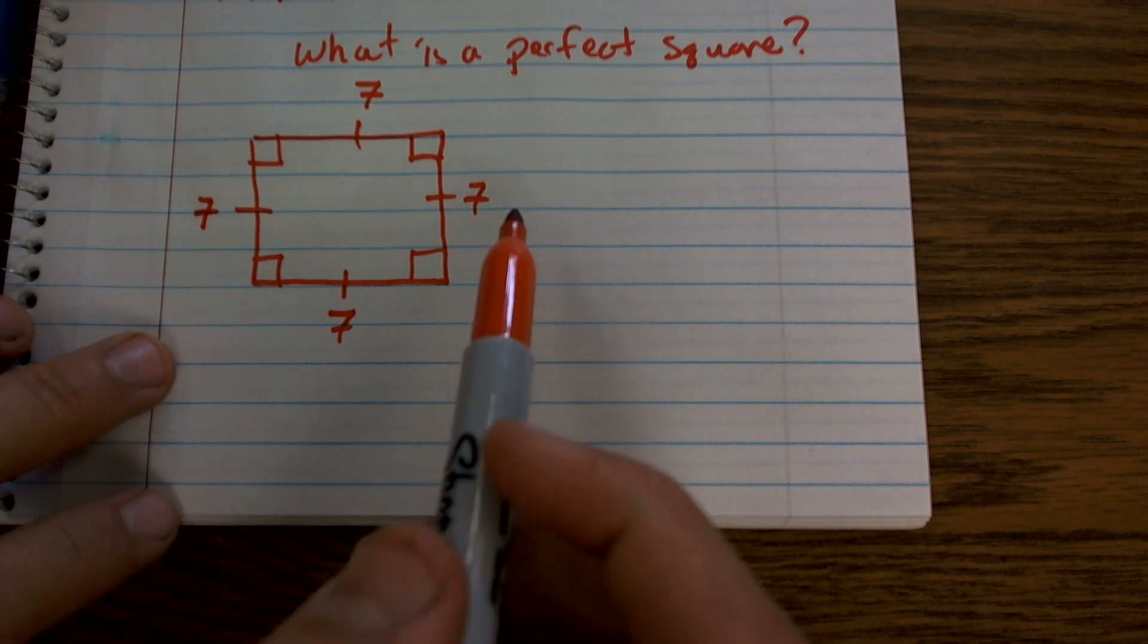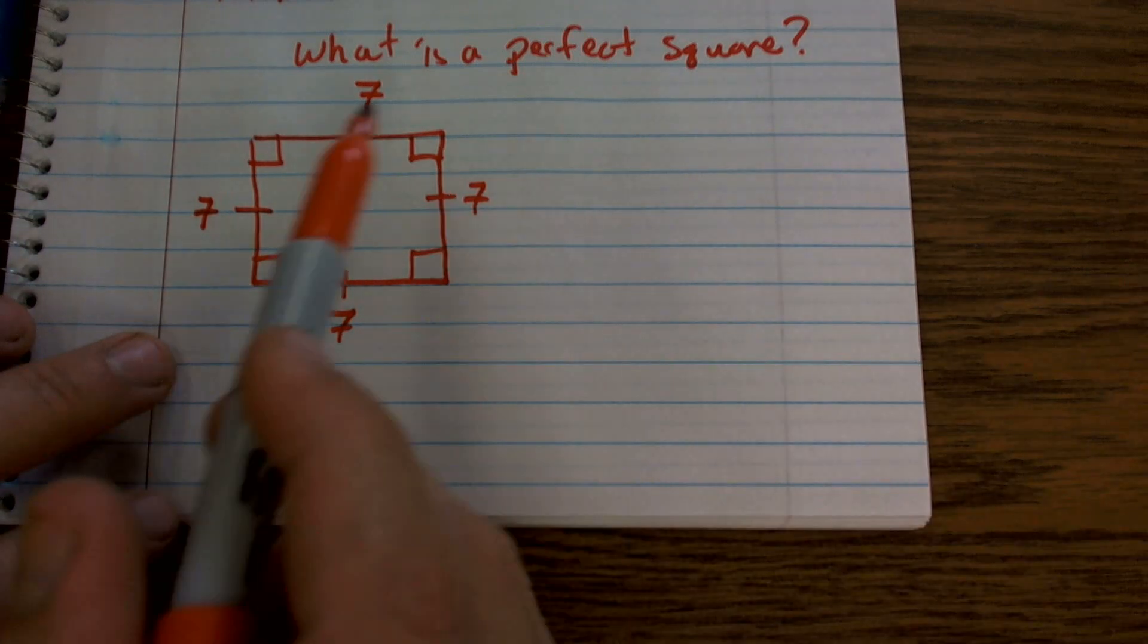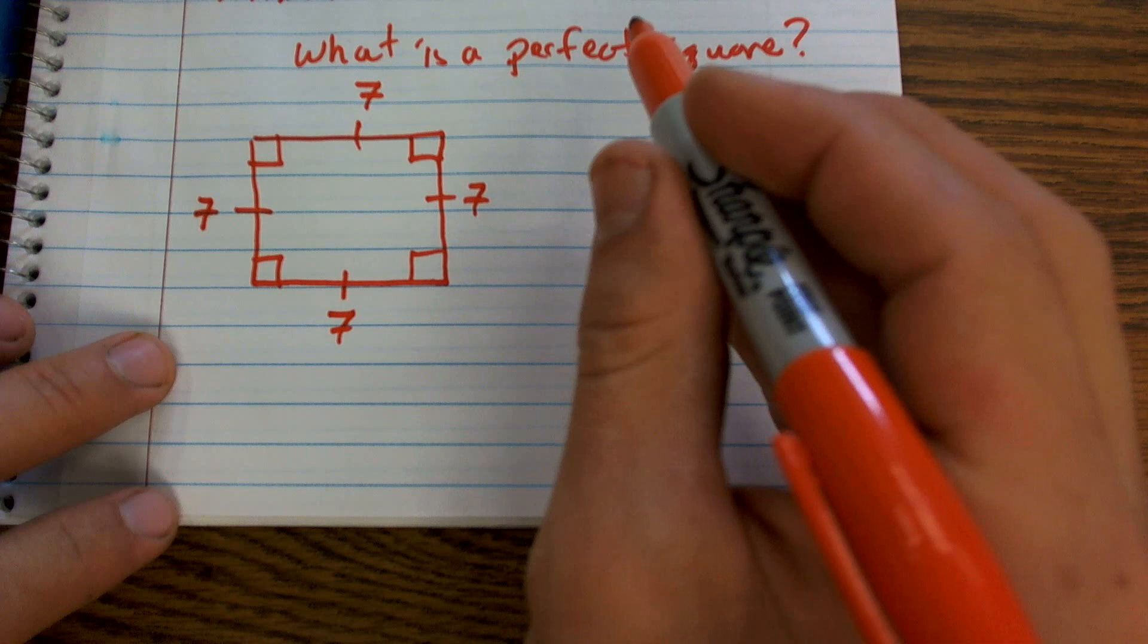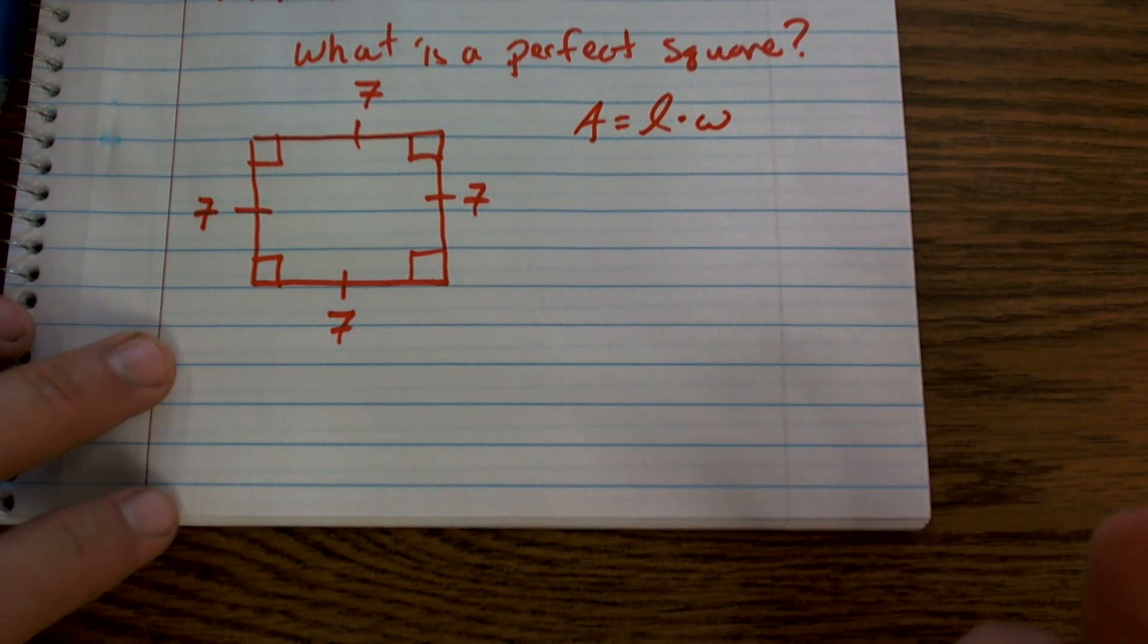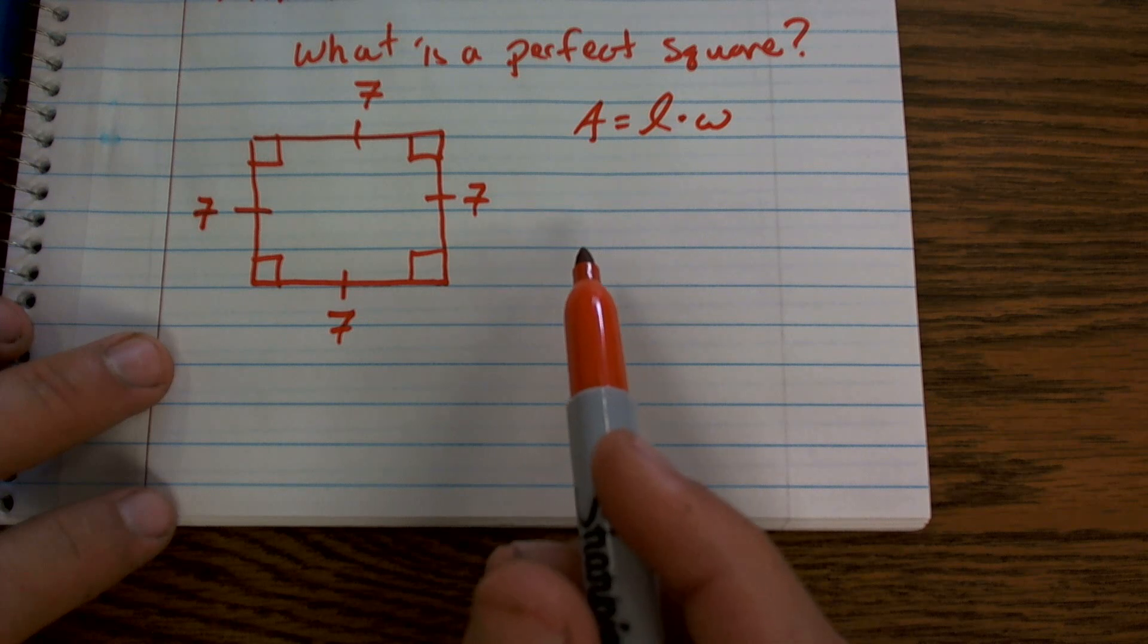And then the next thing is, if I wanted to compute the area of this, the area of a square is equal to length times width or base times height, whatever formula you want to follow.